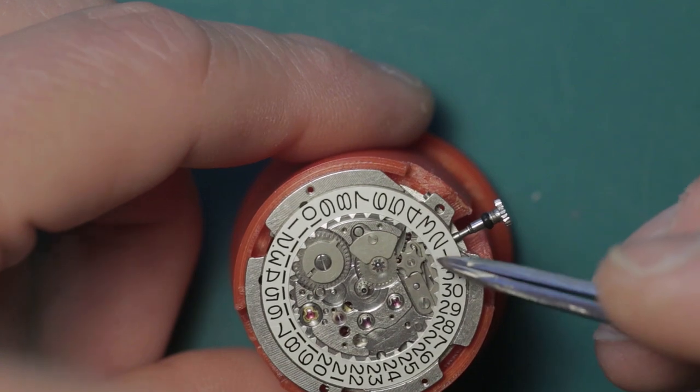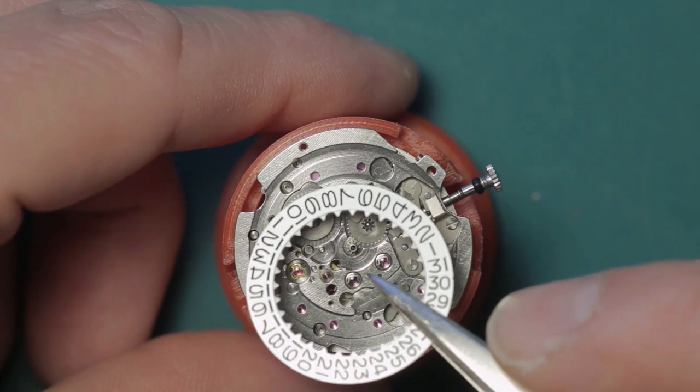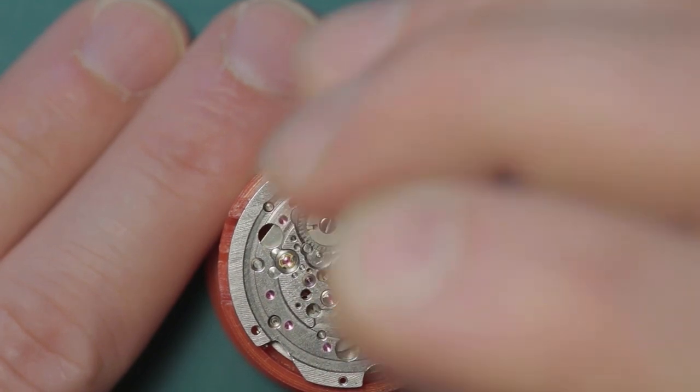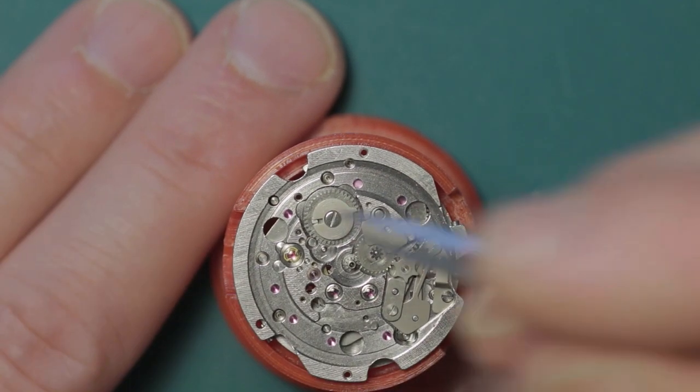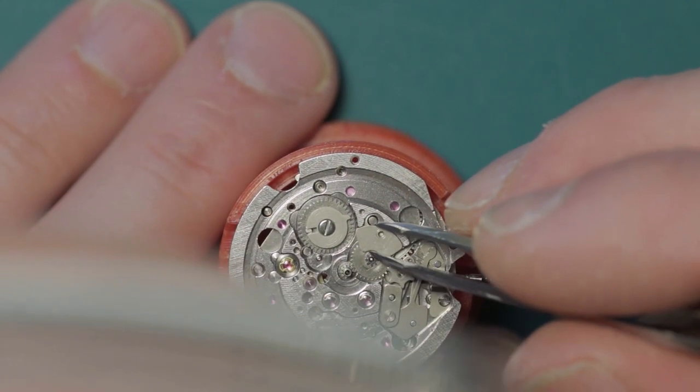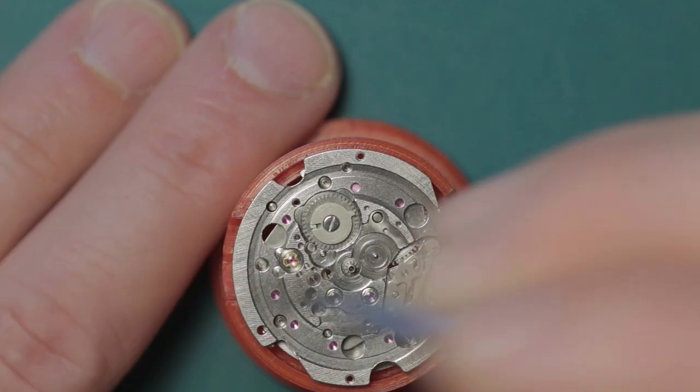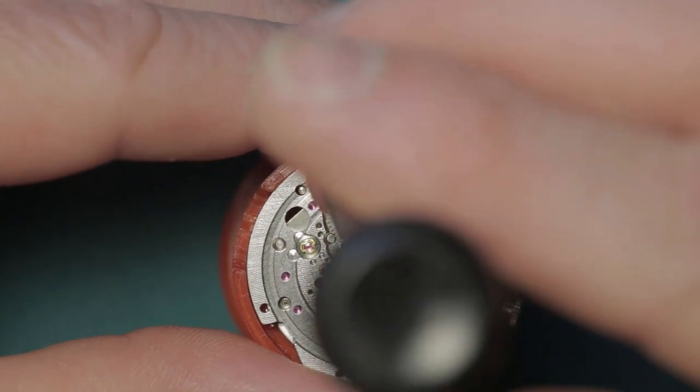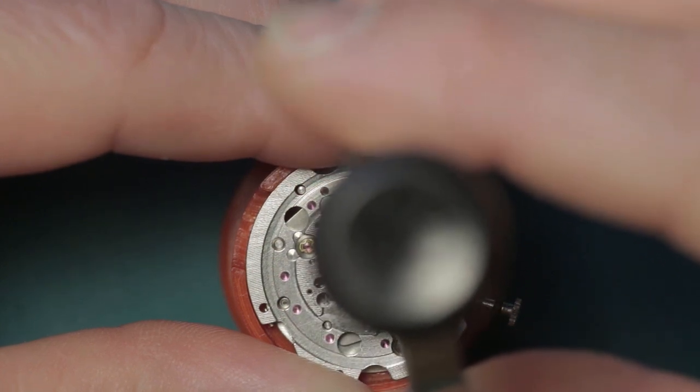Similarly, two very tiny countersunk screws, one of which did not want to leave the screwdriver. A single individual cover plate for the minute wheel, and of course at this point the calendar wheel can be removed. I'm going to remove the cover plate for the minute wheel - single screw and a small plate which simply lifts away, followed by the minute wheel and then the cannon pinion. We'll try with the presto tool first of all and see if this lifts its way - and it does very nicely indeed.